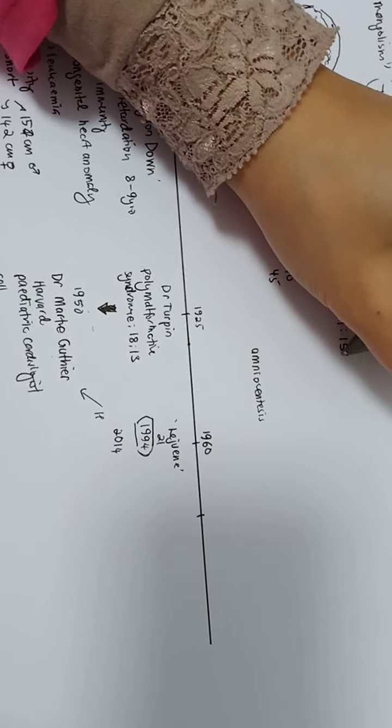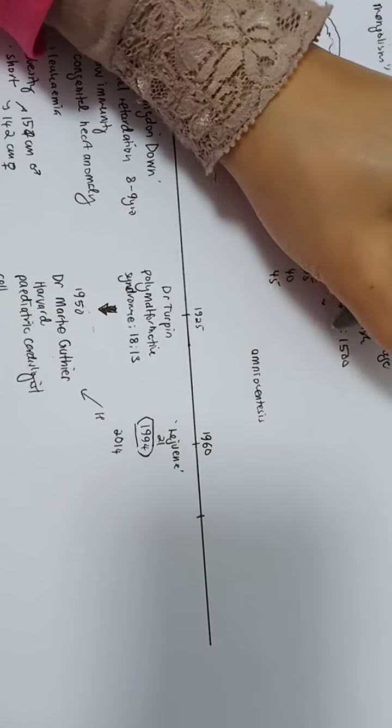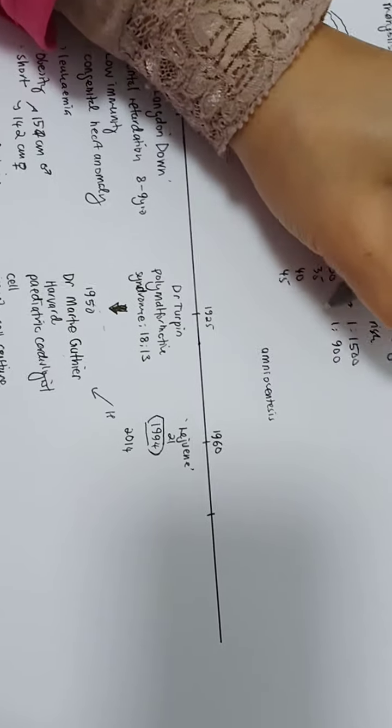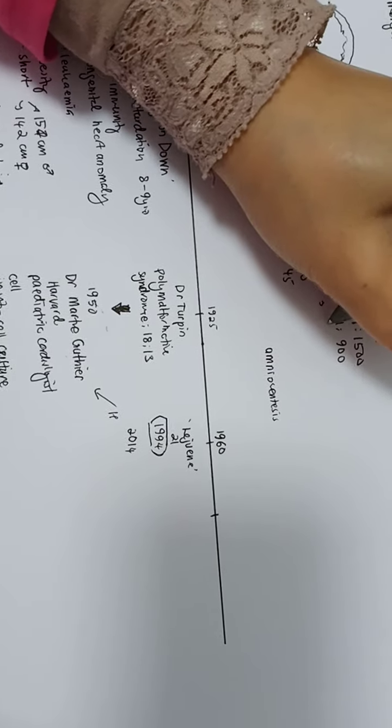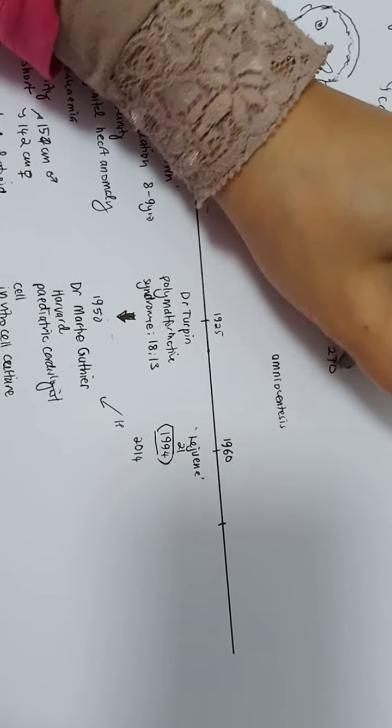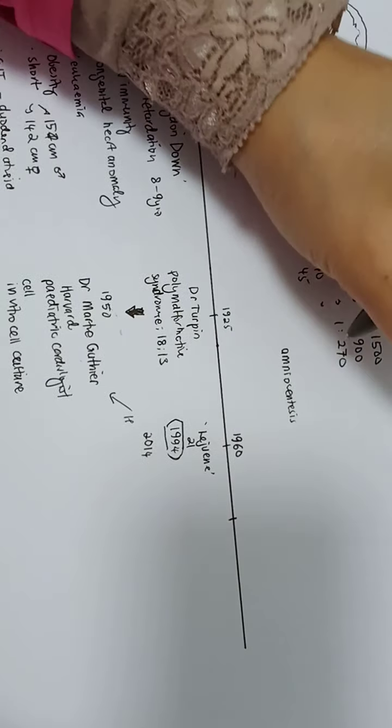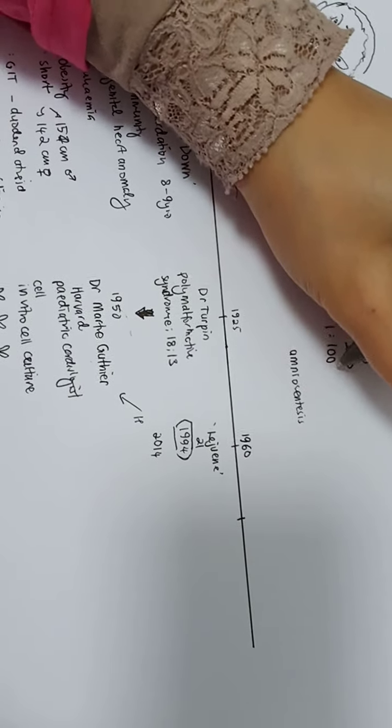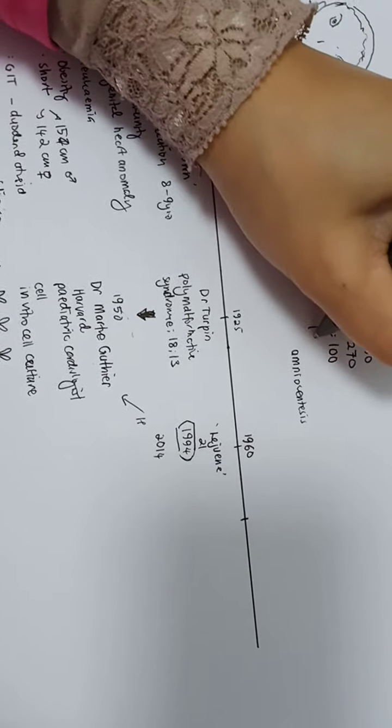1 in 1,500 at 20 years old, 1 in 900 at 30, I just rounded up, 1 in 270 at 35. At 40 years old, the usual quoted number is 1 in 100 and 1 in 50 at 45.